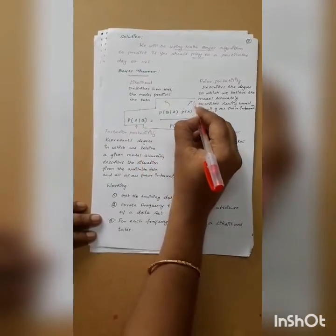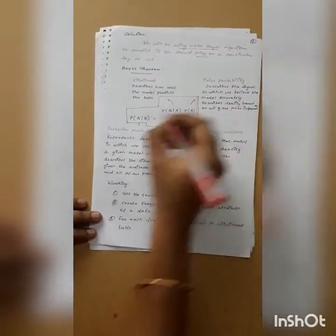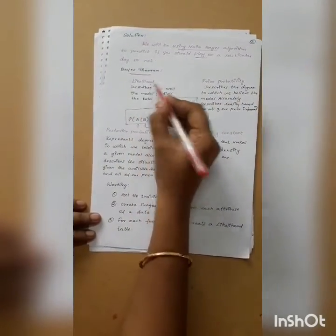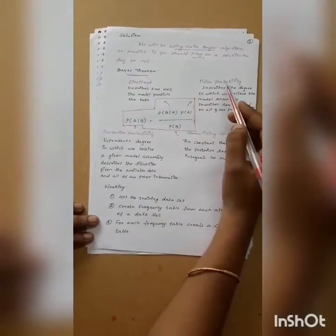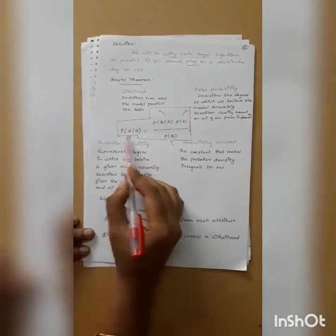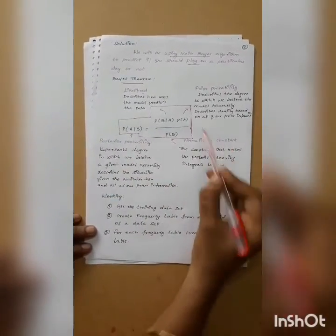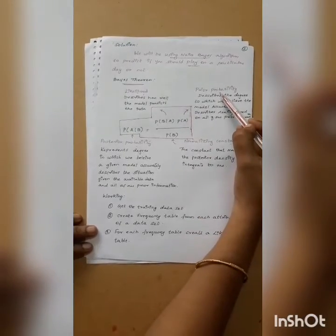This is nothing but calculating the likelihood. P(B|A) is called the likelihood, and P(A|B) is called the posterior probability. P(B) is the normalizing constant, and P(A) is the prior probability.